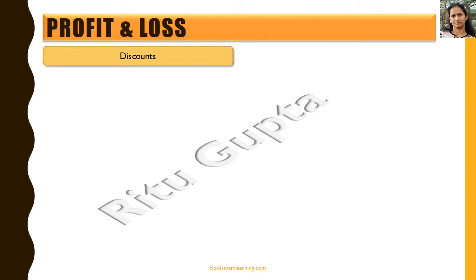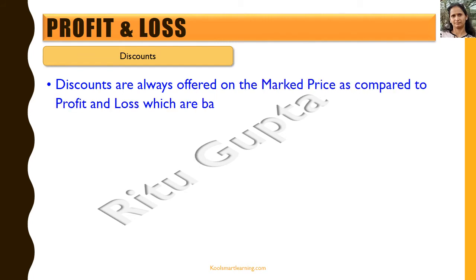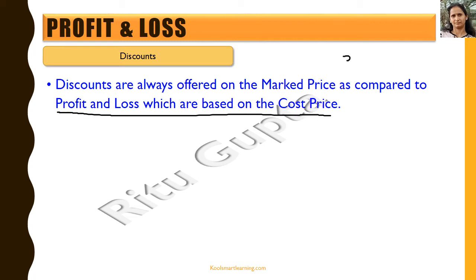Now let's talk about discounts. Discounts also come under the similar category of profit and loss because they are used to evaluate how much profit you make after the discount. Discounts are always offered on the marked price, as compared to profit and loss which are always based on cost price. The marked price is what is tagged on the commodity — you may know this as MRP — and it is different from cost price.